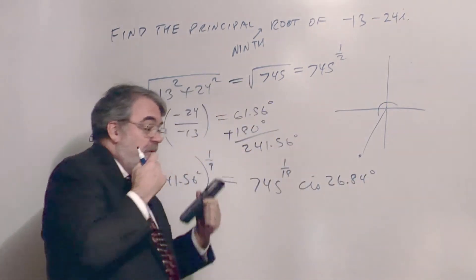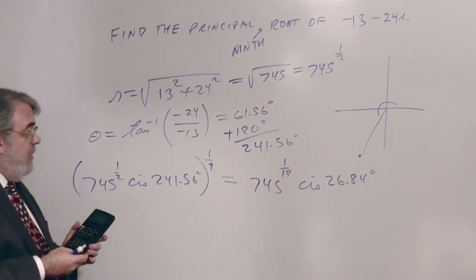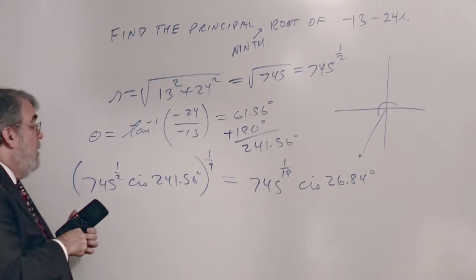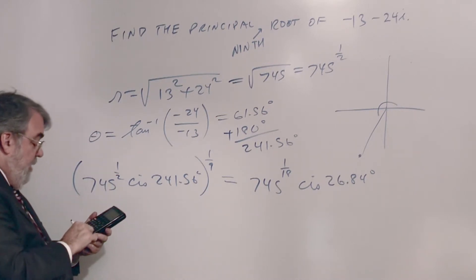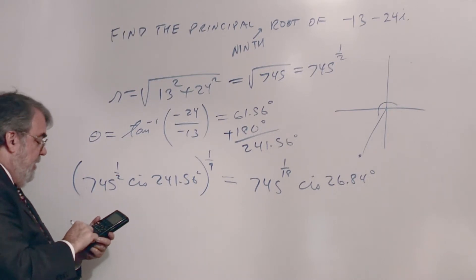Alright, and again for precision, I like to use all the decimal places. I just don't like to write them down and punch them back in. Alright, so in rectangular form, let's see, it's going to be 745 raised to the parenthesis, 1 divided by 18, close parenthesis.